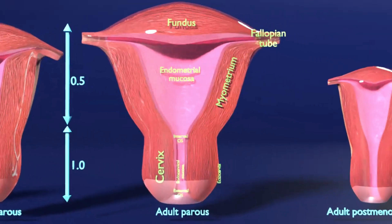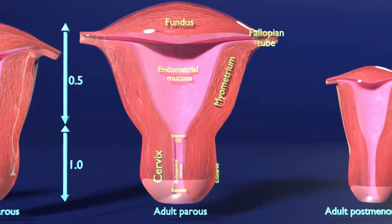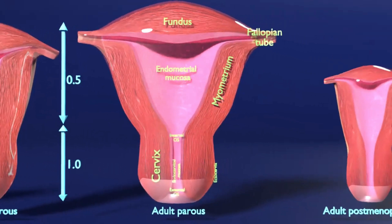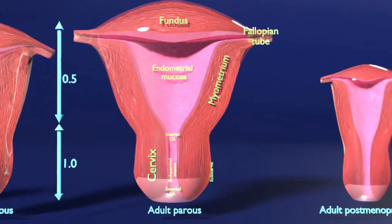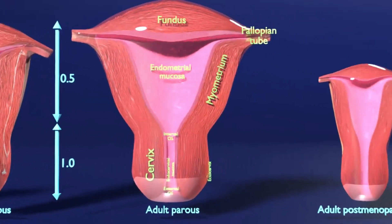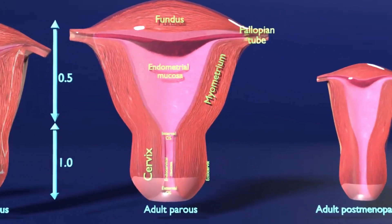In the fetus, the uterus is contained in the abdominal cavity, projecting beyond the superior aperture of the pelvis. The cervix is considerably larger than the body.